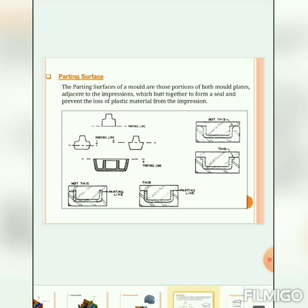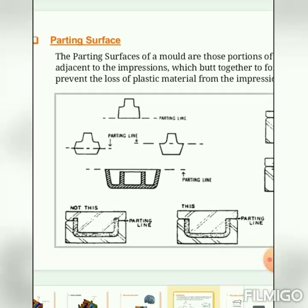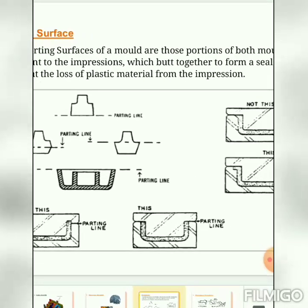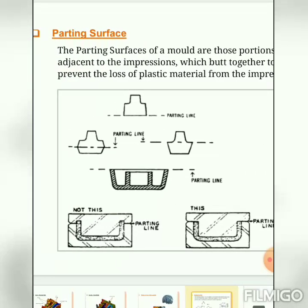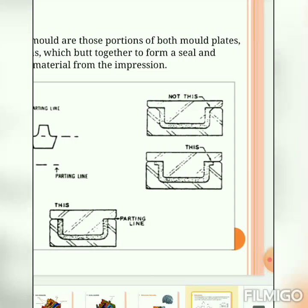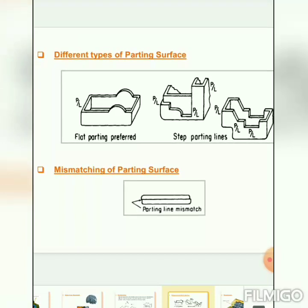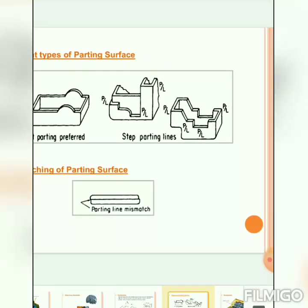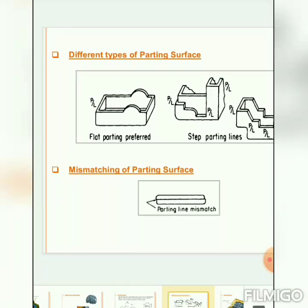The parting surfaces of the mold are those portions of both mold plates that are adjacent to the impression and butt together to form a seal, preventing loss of plastic material from the impression. Parting surfaces vary depending on the shape of the component. Types include a flat parting surface, step parting surfaces, and mismatch parting surfaces.